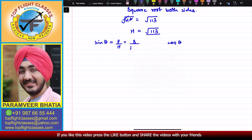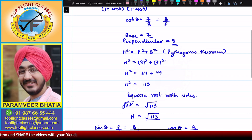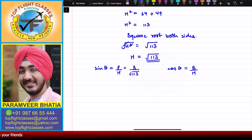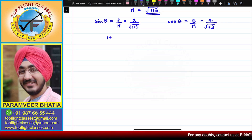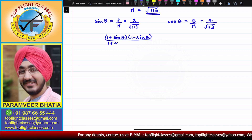Then cosθ is given by base upon hypotenuse for any angle. Base is 7 and hypotenuse is √113, so cosθ = 7/√113. Now what we need to calculate is (1 + sinθ)(1 − sinθ) divided by (1 + cosθ)(1 − cosθ).